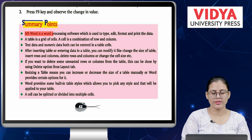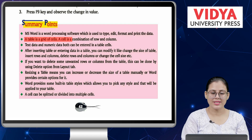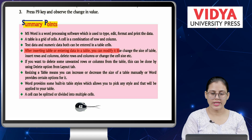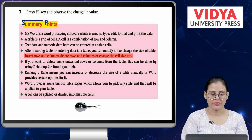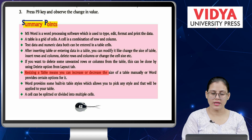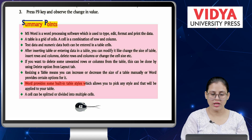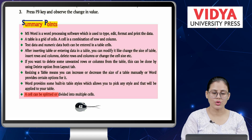Summary points. A table is a grid of cells. A cell is a combination of row and column. Text data and numeric data both can be entered in table cells. After inserting a table or entering data, you can modify it — change the size, insert or delete rows and columns, or change cell size. Resizing a table means you can increase or decrease its size manually or use Word's options. Word provides built-in table styles you can apply. A cell can be split or divided into multiple cells.